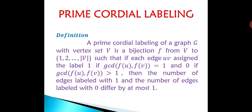Now the definition of Prime Cordial Labeling. A prime cordial labeling of a graph G with vertex set V is a bijection f from V to {1, 2, ..., |V|}, such that each edge uv is assigned the label 1 if GCD(f(u), f(v)) = 1, and label 0 if GCD(f(u), f(v)) > 1. The number of edges labelled with 1 and the number of edges labelled with 0 differ by at most 1. That is, in cordial labeling the vertex set is {1, 2, ..., |V|} and the edge label set is {0, 1}.